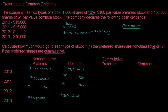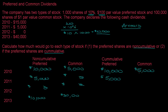Now let's go through the calculation for cumulative preferred stock. In 2010, it's exactly the same — $15,000 total, the first $10,000 goes to preferred shareholders and $5,000 to common. In 2011, I'm only paying out $5,000, so that $5,000 goes to preferred and nothing goes to common.